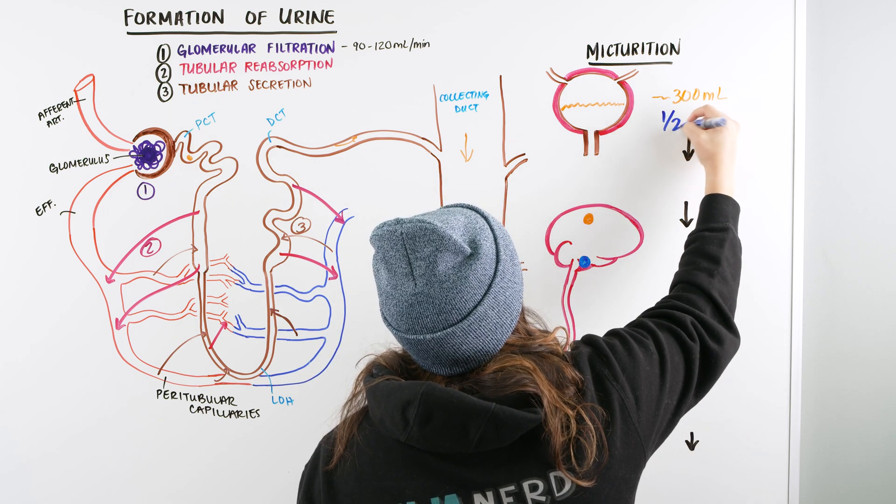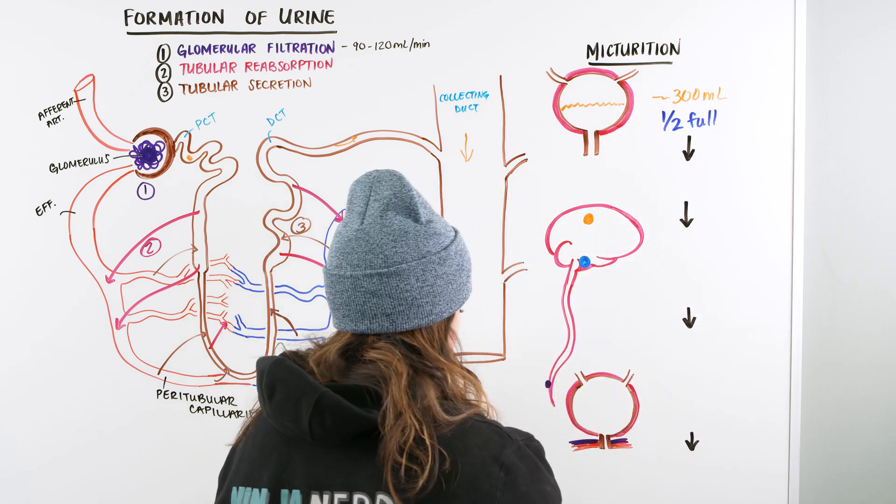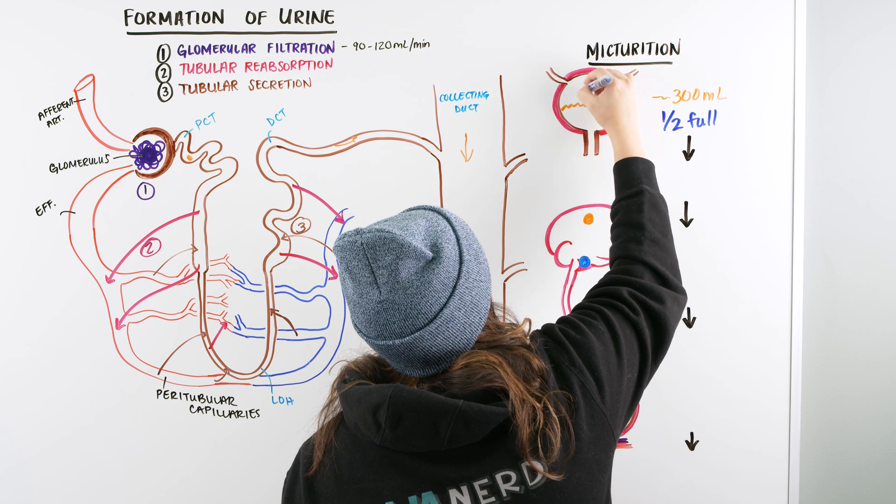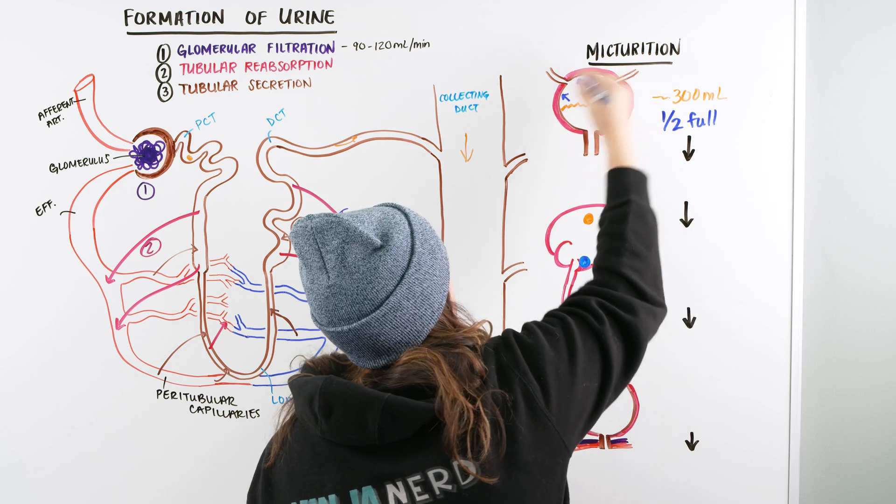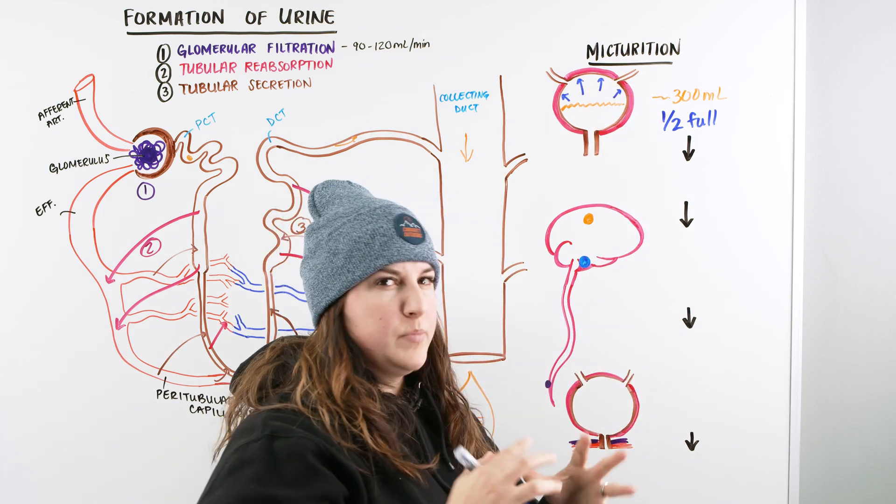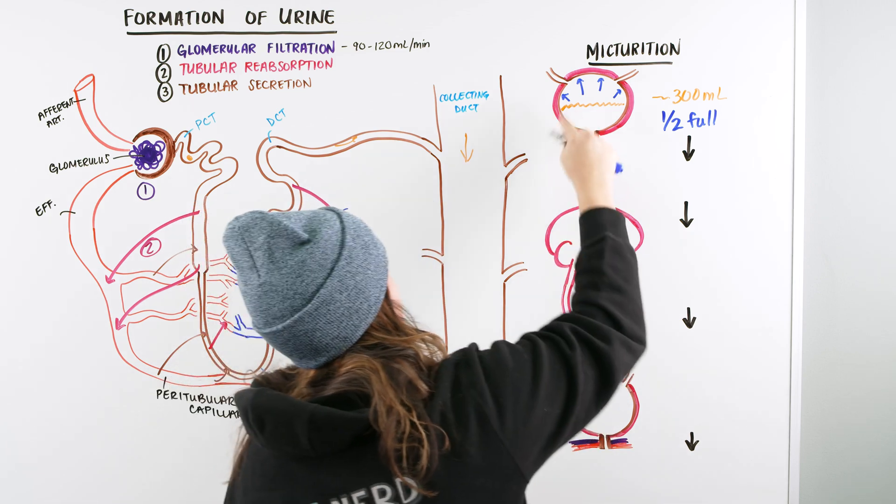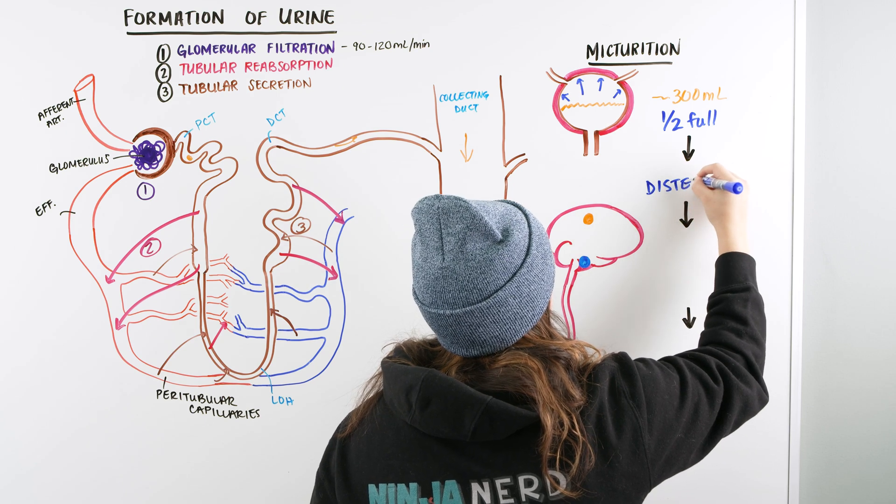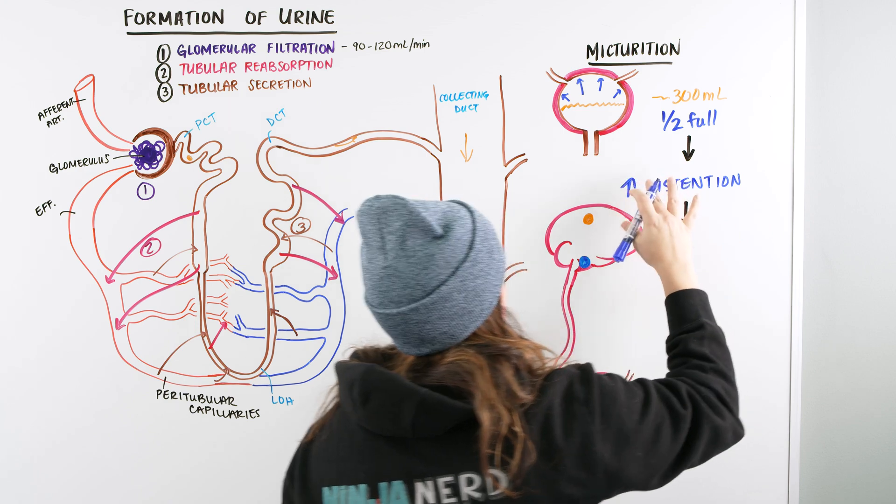So as we get a half full bladder, we start to get pressure on the bladder walls. And our detrusor muscle, this smooth muscle that's around the outside of our bladder starts to expand a little bit. We start to feel this distension, this pressure that's starting to build up on the walls of the bladder. The word that we use for that is distension. And so our patient is going to have an increase in distension in the bladder.